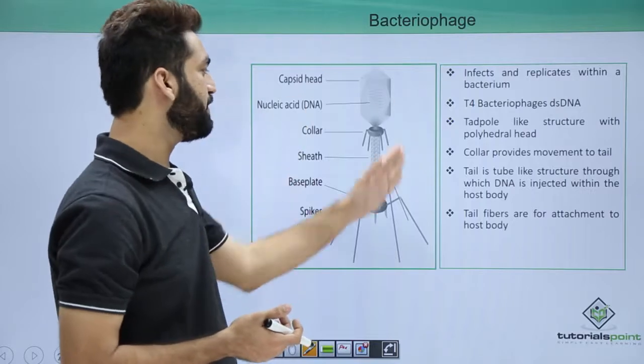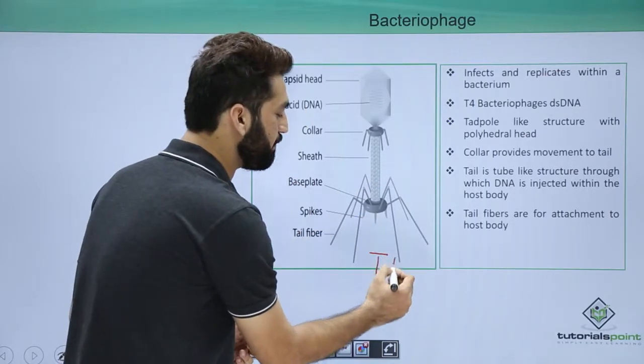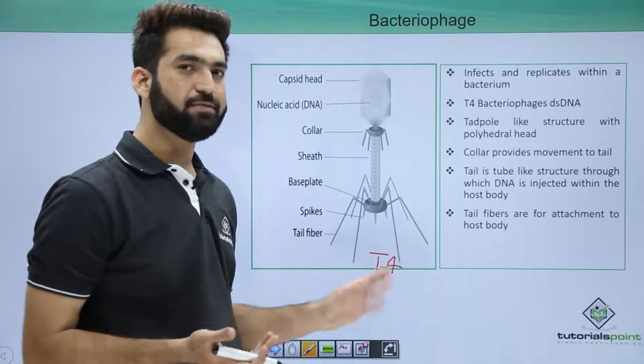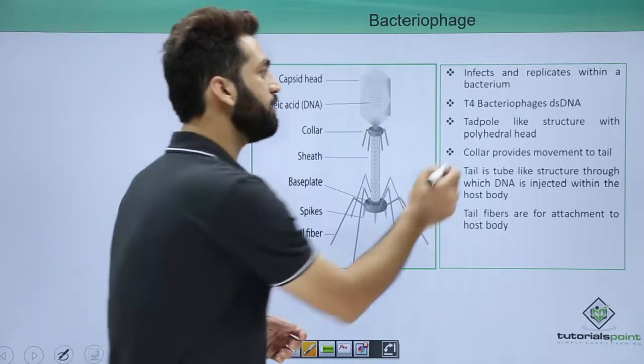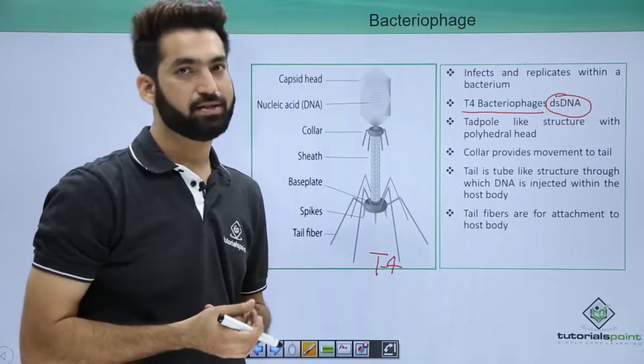When you talk about the details of bacteriophage, this is the T4 bacteriophage. There are many bacteriophages; what I have drawn here is T4 bacteriophage. In T4 bacteriophage you have the genetic material as double-stranded DNA.